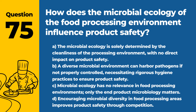Question 75. How does the microbial ecology of the food processing environment influence product safety? a. The microbial ecology is solely determined by the cleanliness of the processing environment, with no direct impact on product safety. b. A diverse microbial environment can harbor pathogens if not properly controlled, necessitating rigorous hygiene practices to ensure product safety. c. Microbial ecology has no relevance in food processing environments; only the end-product microbiology matters. d. Encouraging microbial diversity in food processing areas improves product safety through competition. Answer: b. A diverse microbial environment can harbor pathogens if not properly controlled, necessitating rigorous hygiene practices to ensure product safety. Managing the microbial ecology is essential for preventing contamination.